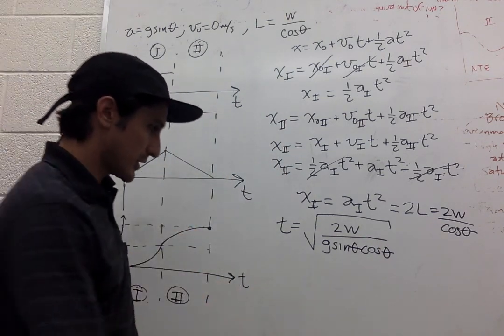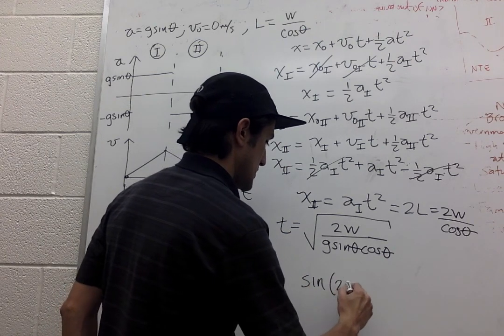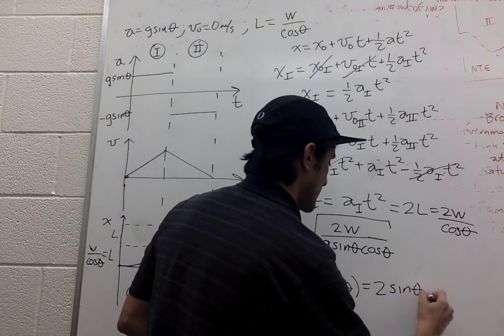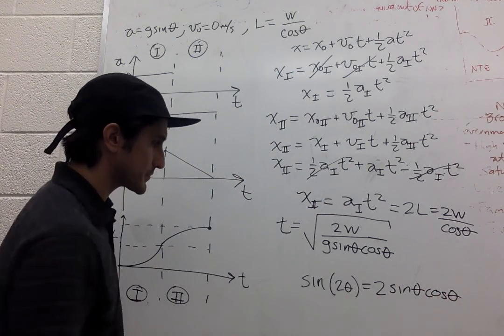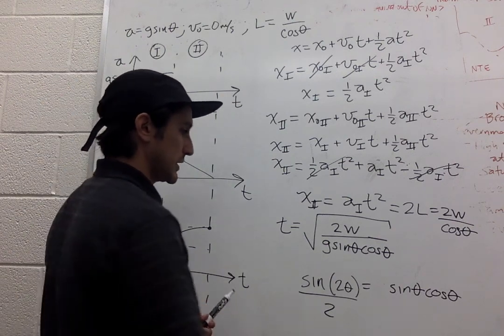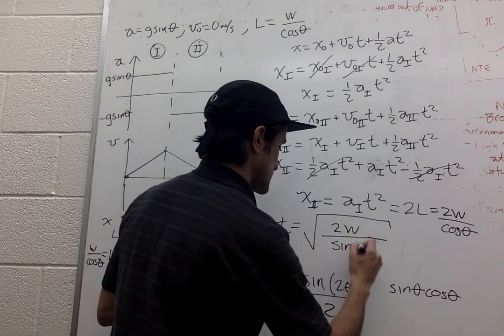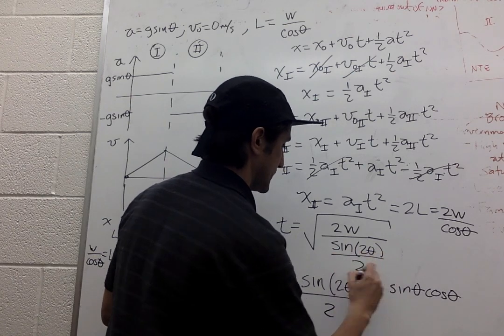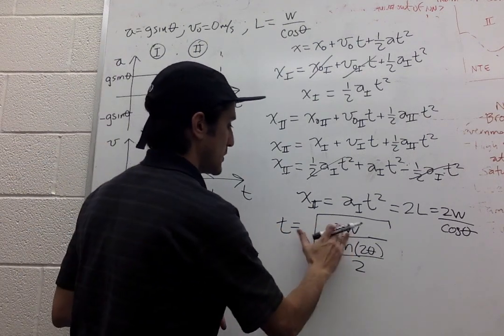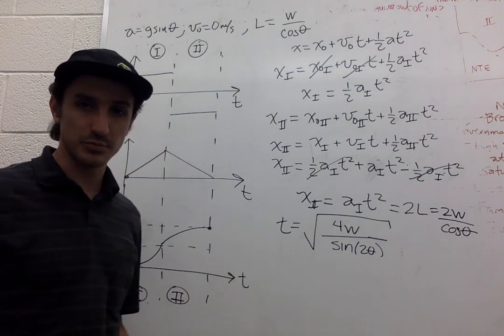So now we can use our trigonometric identity: sine of 2 theta equals 2 sine theta cosine theta, which is what we have over here. Right? So we can replace it. And so we can put the 2 over here. And we have this expression which looks pretty nice.